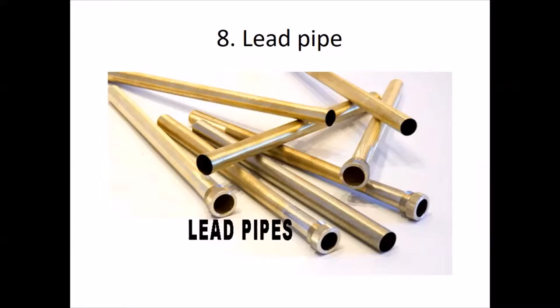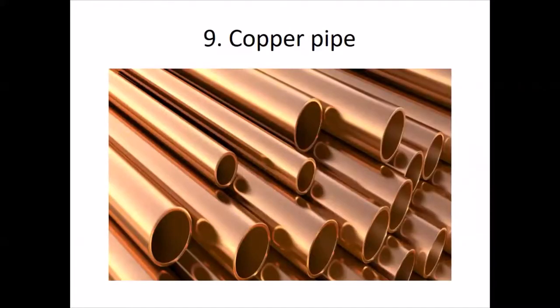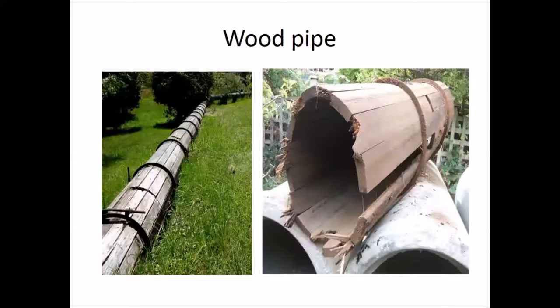Copper pipes are very costly and are not used for ordinary work. They are not affected by corrosion and can resist acidic action. These pipes are generally used in chemical industries and for making connections in housing plumbing. Sometimes they are used in hot water supply lines.